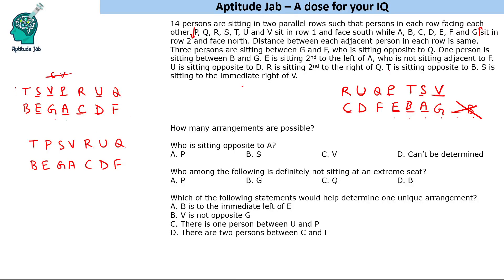We end up with three possible arrangements: Case 1, Case 2, and Case 3. Now answering the questions: Who is sitting opposite to A? In each case we get different people, so we cannot determine a unique answer. Who among the following is definitely not sitting at an extreme end? P is at a central position in all cases — G, Q, and B are at ends in various cases, but P is never at an end.